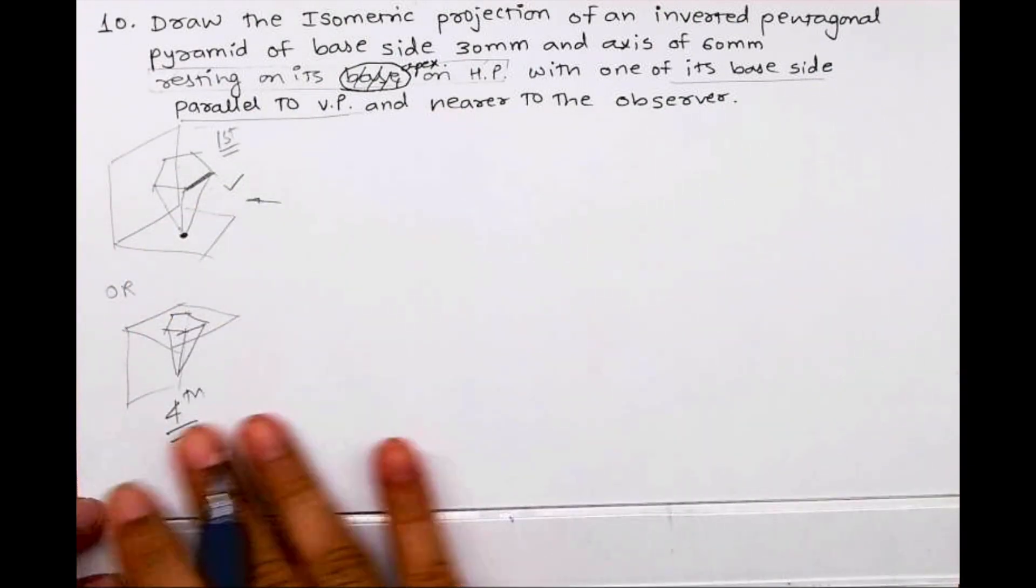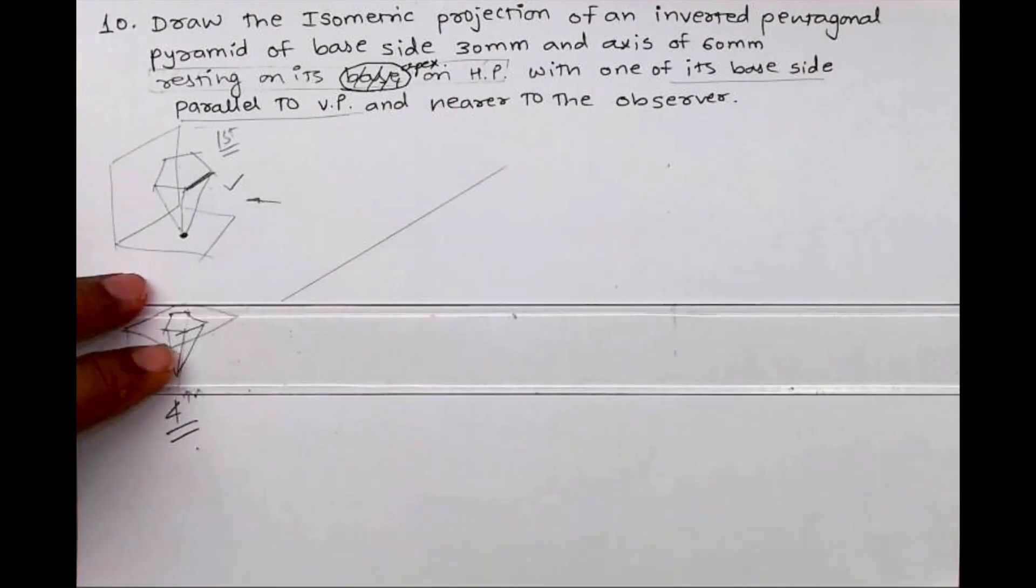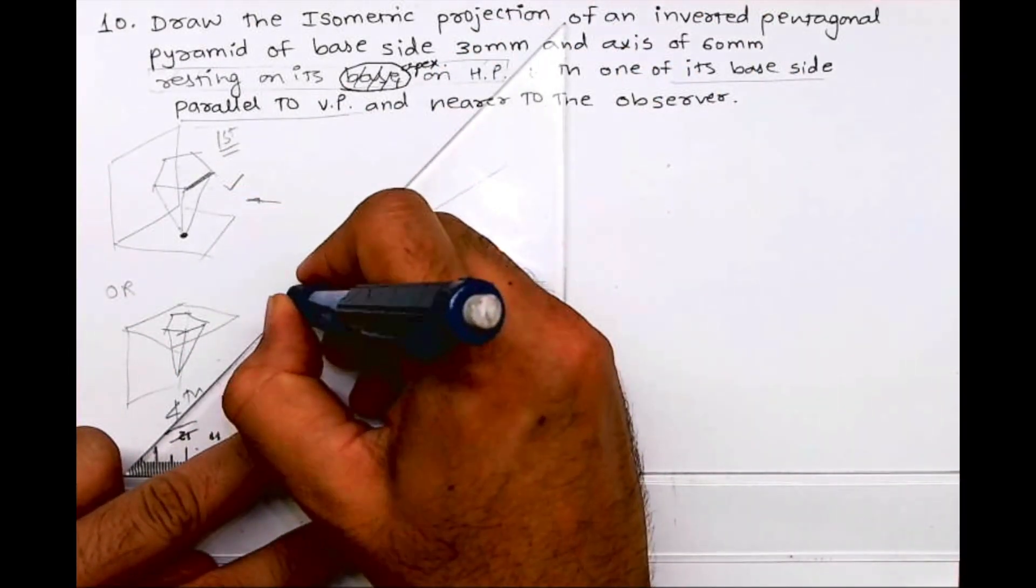Now one side is parallel to VP and nearer to the observer, so when observer will see from here it will be this way. So first we will draw isometric scale. All of you know how to draw 30, 45, and in this we are going to mark till 60.